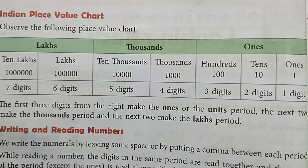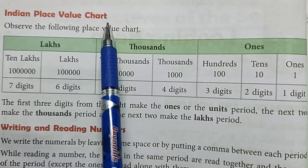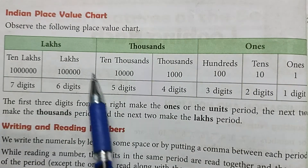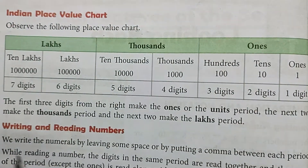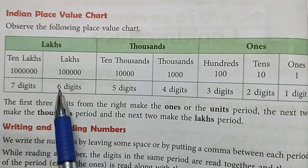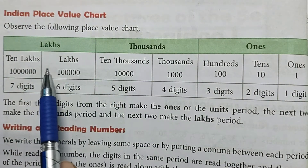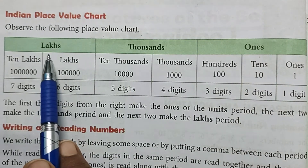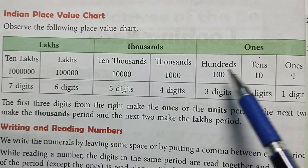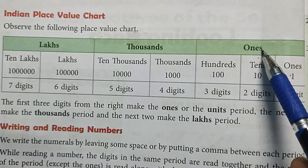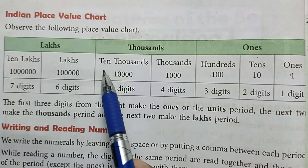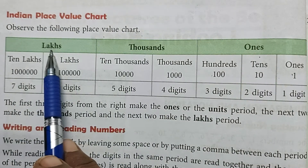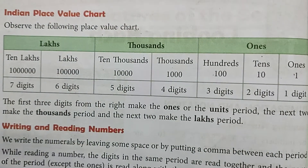Next topic is Indian place value chart. India में numbers को use करने के लिए जो place value chart use होता है उसमें 3 periods होते हैं: ones, thousands, and lakhs. Ones, tens और hundreds — यह तीनों ones period में आते हैं। Thousand and ten thousand — thousands period में आते हैं। Lakh and ten lakhs — lakhs period में आते हैं।